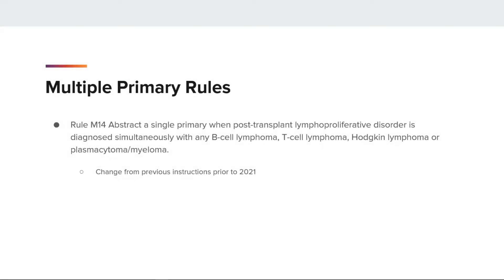The last rule pertaining to transformations is rule M14, which tells us to abstract a single primary when post-transplant lymphoproliferative disorder is diagnosed simultaneously with any B-cell lymphoma, T-cell lymphoma, Hodgkin lymphoma, or plasmacytoma/myeloma. This is a change from previous instructions. As of 2021, post-transplant lymphoproliferative disorder without an associated lymphoma or plasmacytoma is a behavior code of one and is no longer reportable.